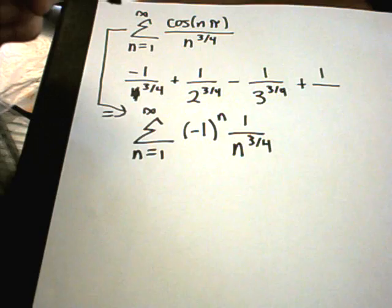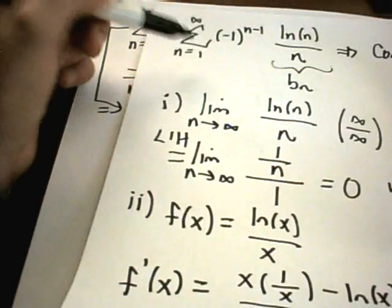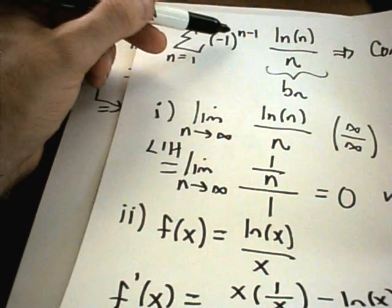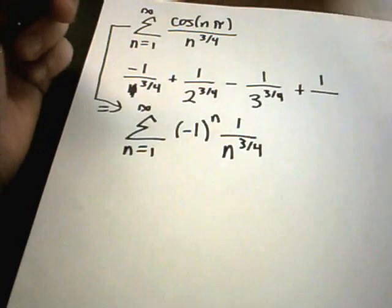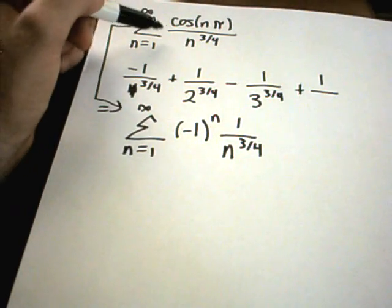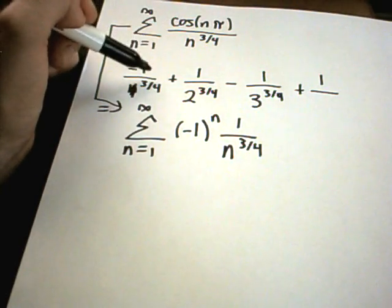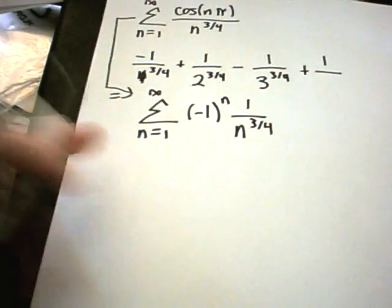So really, this series is a fancy way of writing the series n equals 1 to infinity. Negative 1 to the n over n to the 3 fourths. OK. So kind of a tricky way that they wrote it. It doesn't look exactly like these other ones where you have this negative 1 to the power kind of staring you in the face. So when you get stuck, write out some terms, see what happens. It may make the problem, in fact, much easier, like in this case.